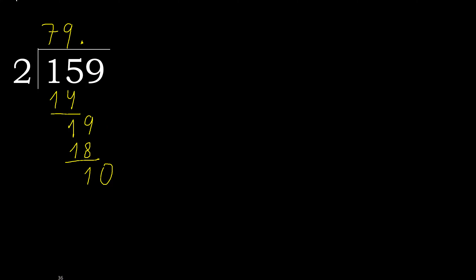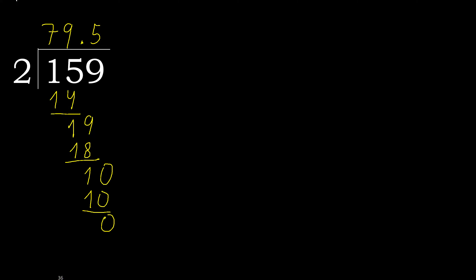10 — 2 multiplied by 5 is 10, which is not greater. 10 minus 10 is 0. Therefore finish. 159 divided by 2 is 79.5.